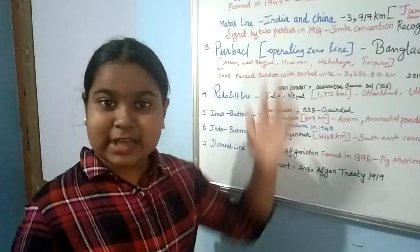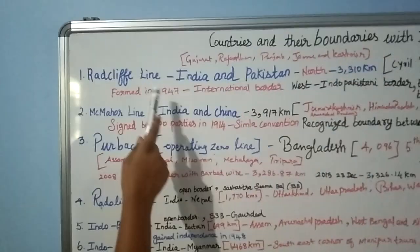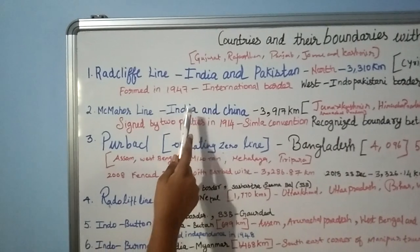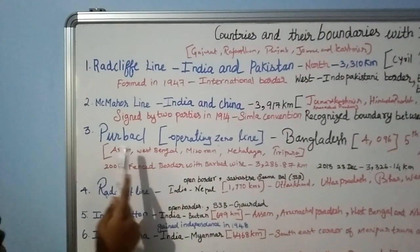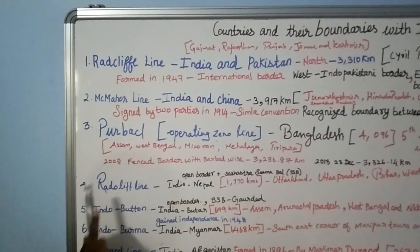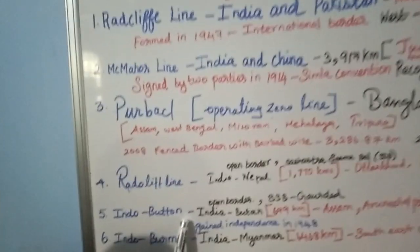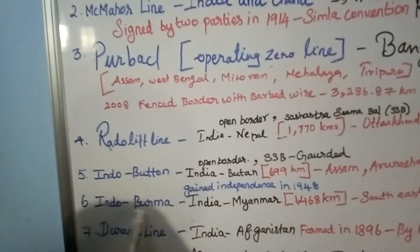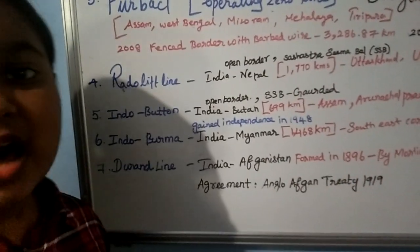First, let's read out the boundaries: Radcliffe Line, McMahon Line, Purbank, Radcliffe Line, Indo-Bhutan, Indo-Burma and Durand Line. These are the seven lines which India is sharing with other countries.